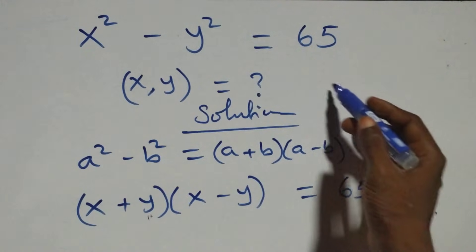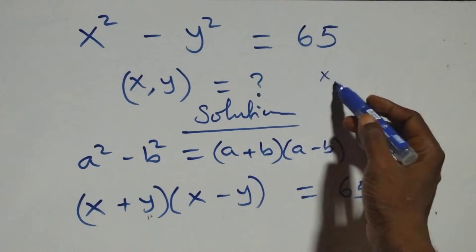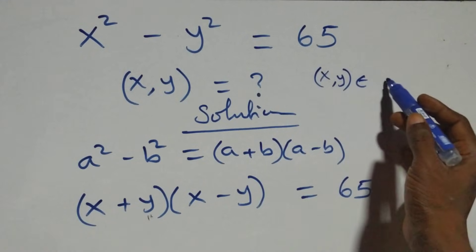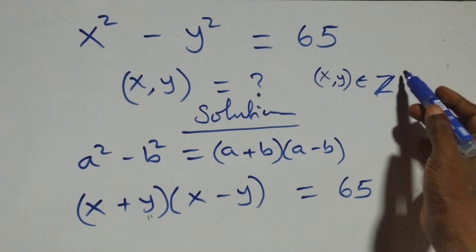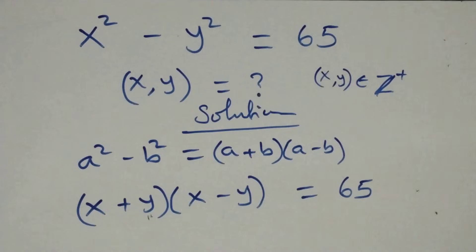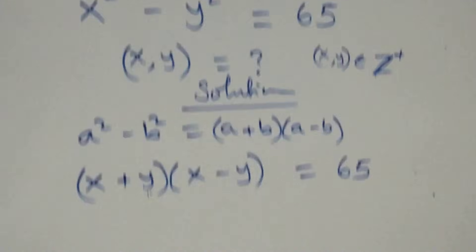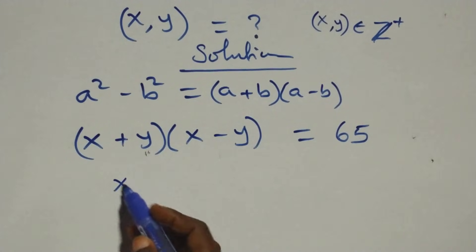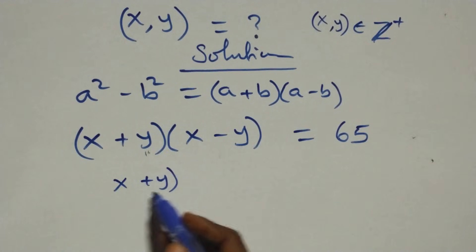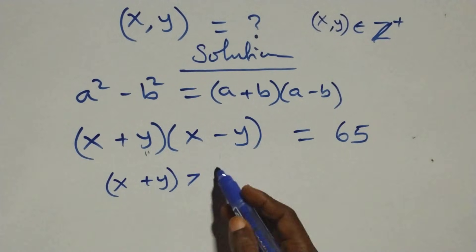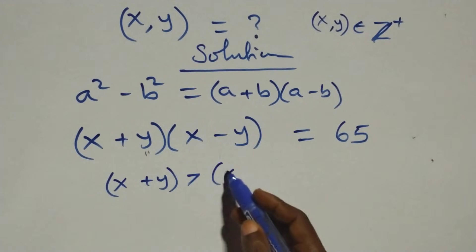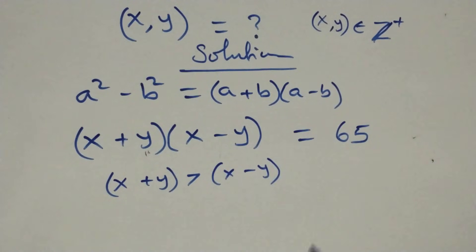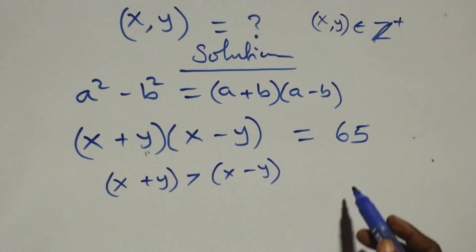Here x and y are members of the positive integers. This implies that the first bracket, which is x plus y, is expected to be greater than the second one, which is x minus y. Let's see the possible cases.